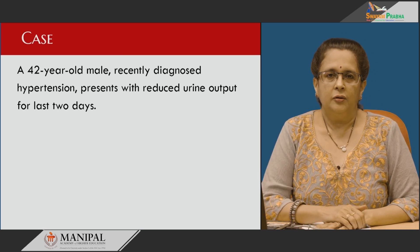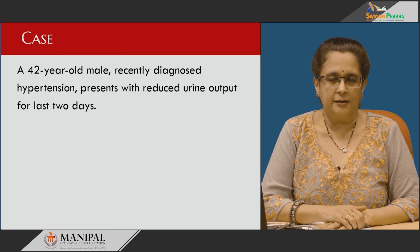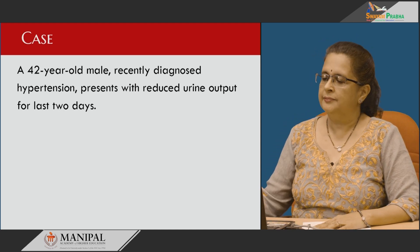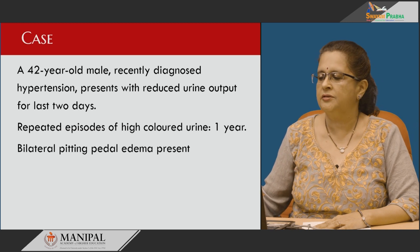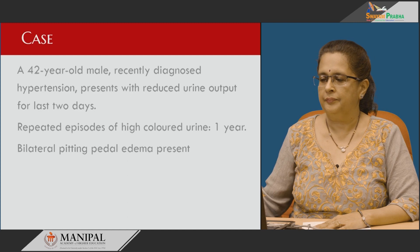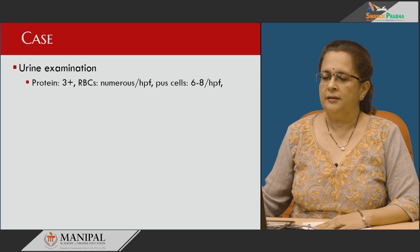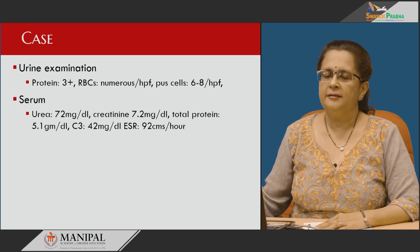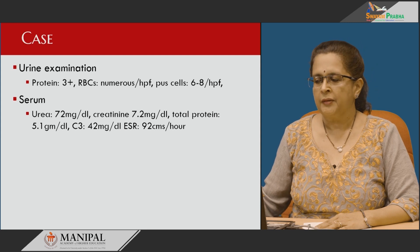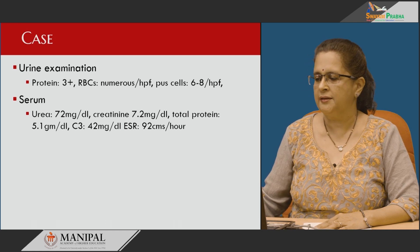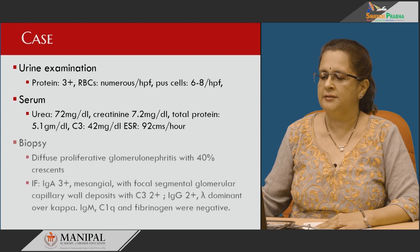A 42-year-old male who was recently diagnosed as being hypertensive presents with reduced urine output for the last two days. He gives history of repeated episodes of tea-colored urine for the past one year and has bilateral pitting pedal edema. Urine examination detected 3 plus protein, numerous RBCs per high-power field, pus cells of 6 to 8 per high-power field, and serum urea and creatinine were elevated.